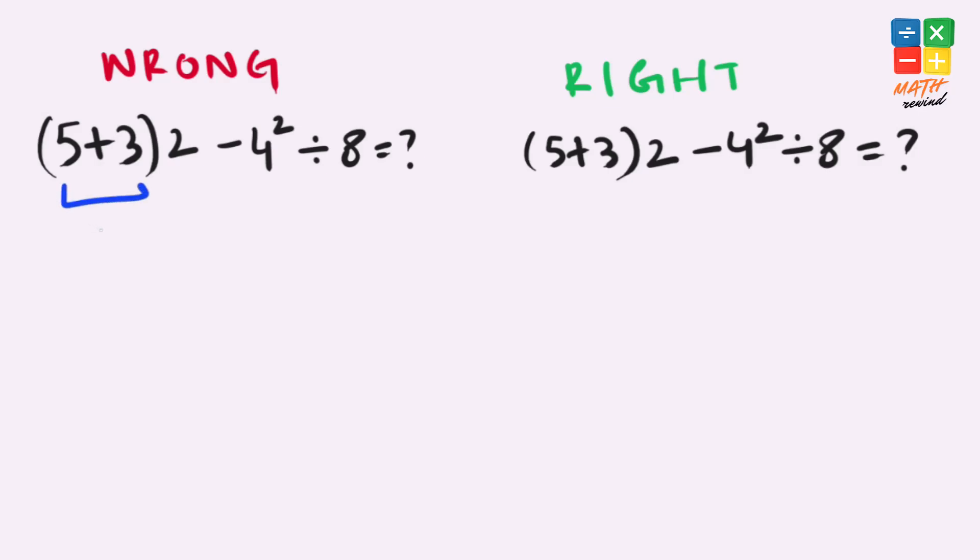5 plus 3 equals 8 times 2 minus 4 power 2 divided by 8. Now 8 times 2 equals 16 minus 4 square equals 16 divided by 8. 16 minus 16 equals 0. 0 divided by 8 equals 0. But this answer is not correct. Why you ask?